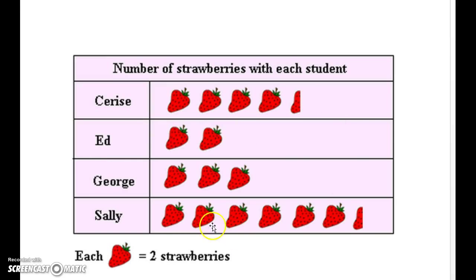The most number of strawberries, or the highest number of strawberries, is the biggest number of pictures. So Sally ate the most because she's got the most pictures next to her name.